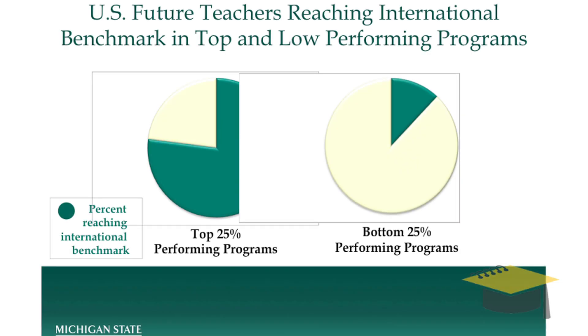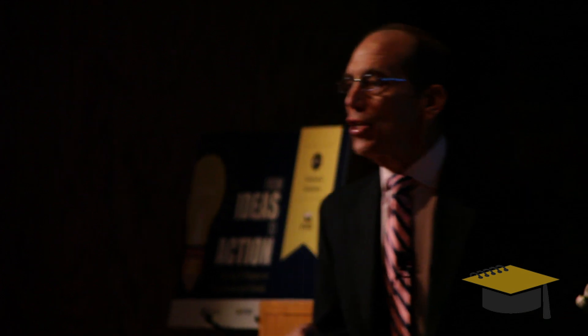But when you break it down further, you come up with a startling result. Within the United States, across 83 public and private universities that we sampled, we found that among the top programs, 80% of the students took those courses — that's the good news. But the bottom 25% of the programs in this country, only about 10% took that kind of coursework. And here's the startling statistic: those programs in that bottom quartile produced 60% of all future middle school teachers of mathematics in the United States, because they are large institutions that turn out large numbers of students — filling our system with teachers inadequately prepared to teach the Common Core.